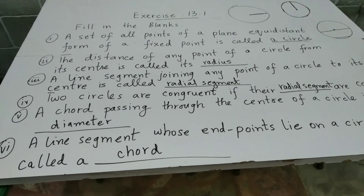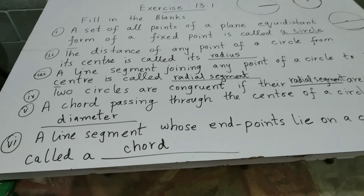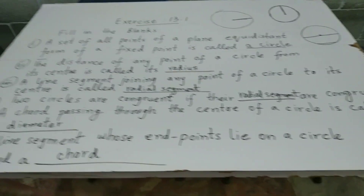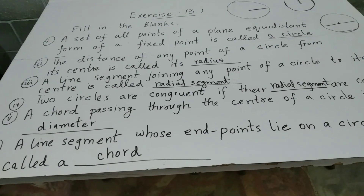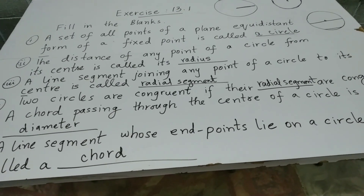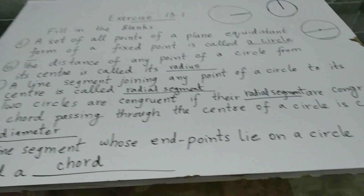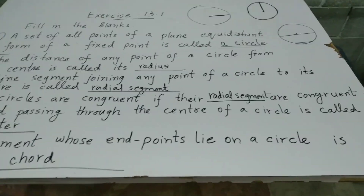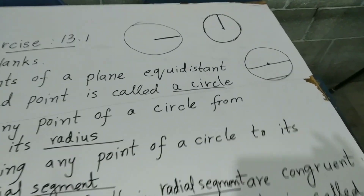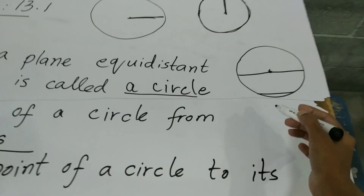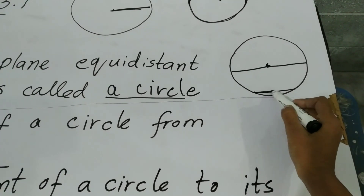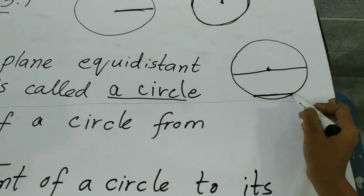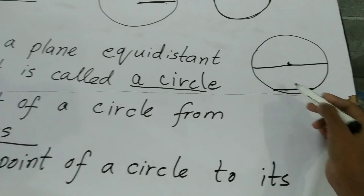Next: a line segment whose end points lie on a circle is called a chord. एक ऐसी line जिसके दोनों end points circle पर हों, वो कहलाती है chord. जैसे यह नीचे वाली line बनाई — इसके दोनों end points इस circle पर हैं, तो यह कहलाएगी chord.